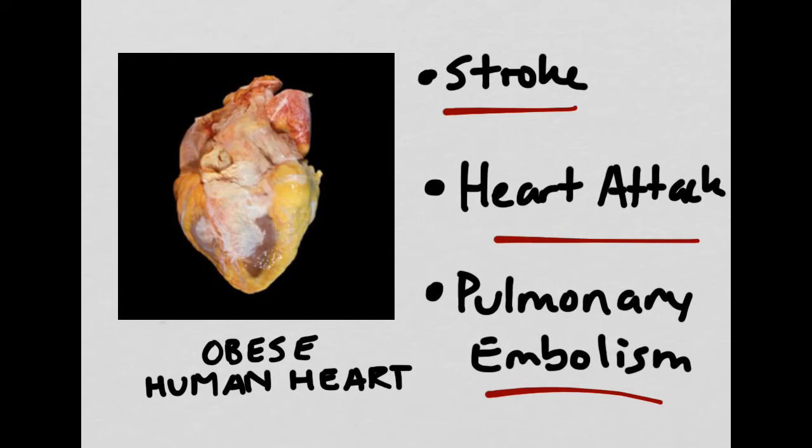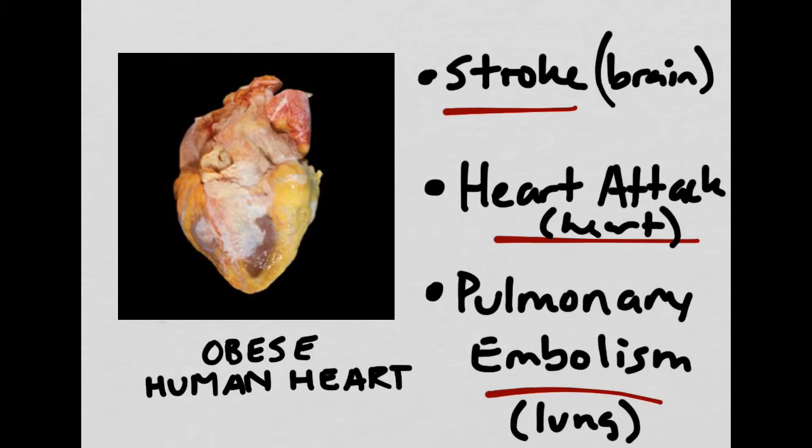If the chunk of fat gets stuck in your brain, then we call that a stroke. It's going to prevent oxygen from going to all the parts of the brain that need it. If it gets stuck in the blood vessels that supply the heart muscle, we call this a heart attack. And if it gets stuck inside the blood vessels of the lungs, we can call this a pulmonary embolism. All of these things can kill you because they block blood flow to a specific area, which prevents the heart from getting the blood that it needs in order to contract, or prevents the brain or lungs from getting the blood they need.